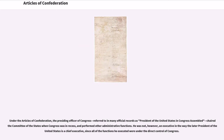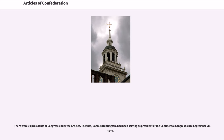Under the Articles of Confederation, the presiding officer of Congress — referred to in many official records as President of the United States in Congress Assembled — chaired the Committee of the States when Congress was in recess and performed other administrative functions. He was not, however, an executive in the way the later President of the United States is a chief executive, since all of the functions he executed were under the direct control of Congress. There were 10 Presidents of Congress under the Articles. The first, Samuel Huntington, had been serving as President of the Continental Congress since September 28, 1779.